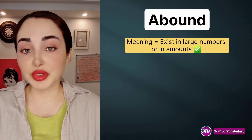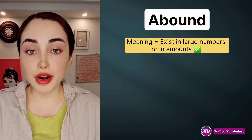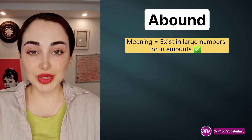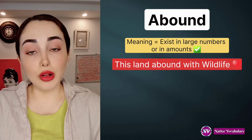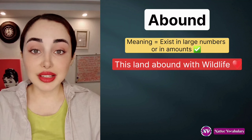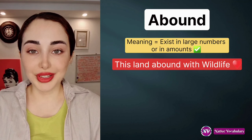Abound. The stress is on the second part, on the B. Abound. It's a verb and it means exists in large numbers or amounts. For example, this land abounds with wildlife.